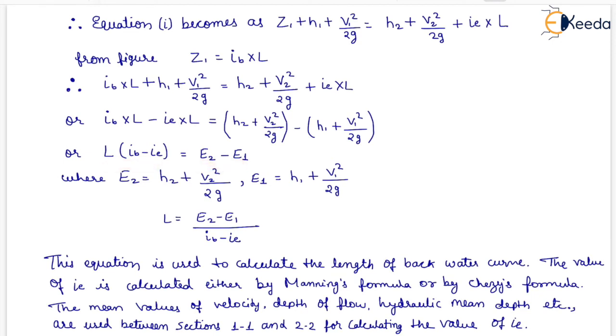Where E2 equals H2 plus V2 square upon 2G. E1 equals H1 plus V1 square upon 2G. L equals E2 minus E1 upon iB minus iE which is shown here. This equation is used to calculate the length of backwater curve.